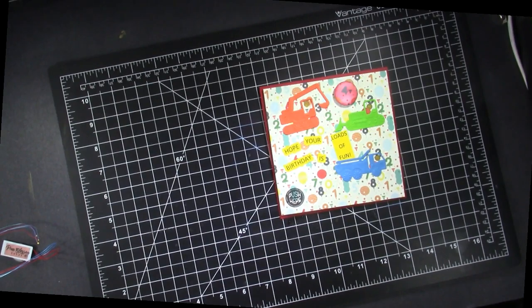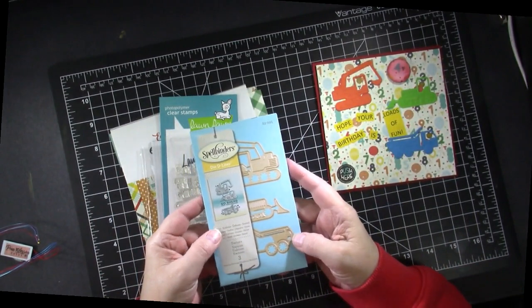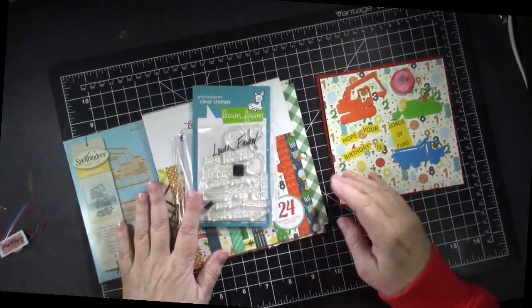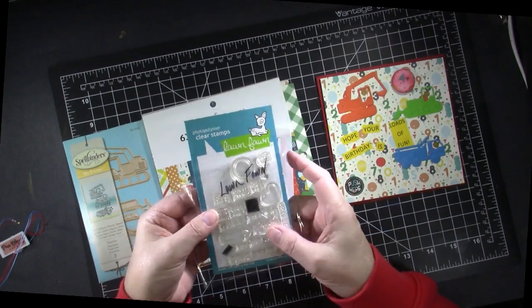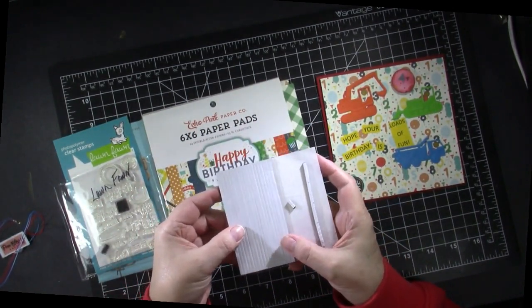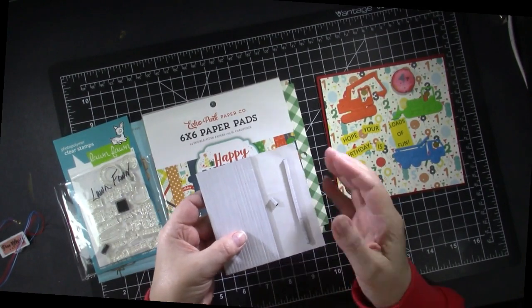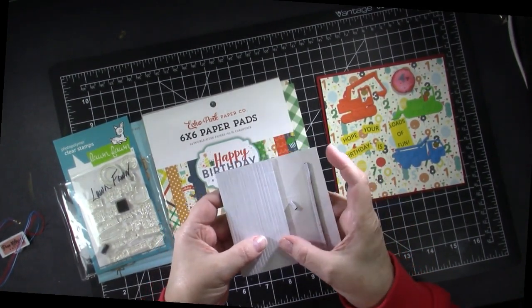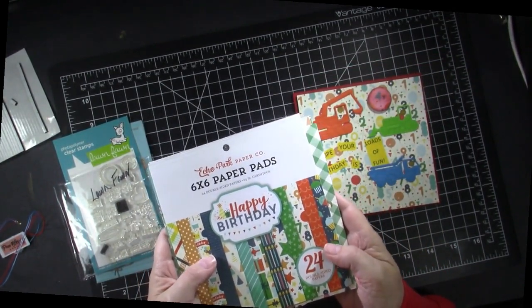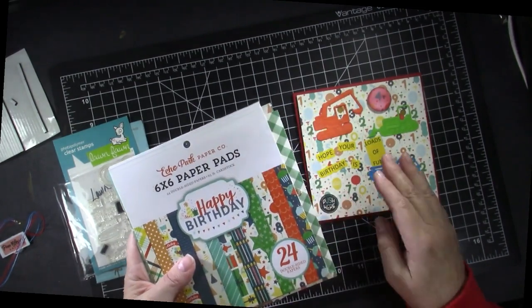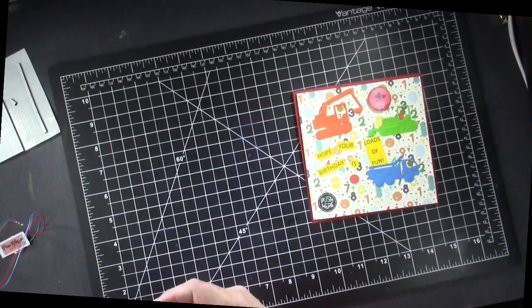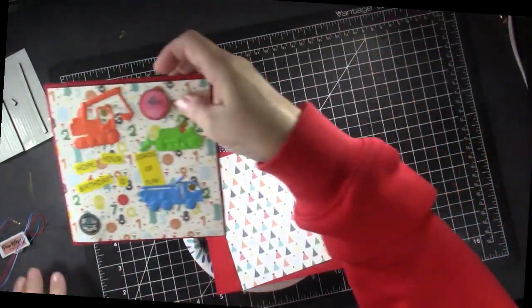Here are the products that I used to make this card and I'm going to make another one with you. The trucks are a Spellbinders die set that's called Tractors. The 'Push here' is a stamp from an interactive set from Lawn Fawn. Again links to all these products will be in the description box. These are skinny foam strips from Motion Crafts and I love those and use them all the time. And then the paper is 'Happy Birthday for Boys' from Echo Park and I've chosen a different one for the card that I'm going to make. But those fun birthday papers make the card very easy to make.